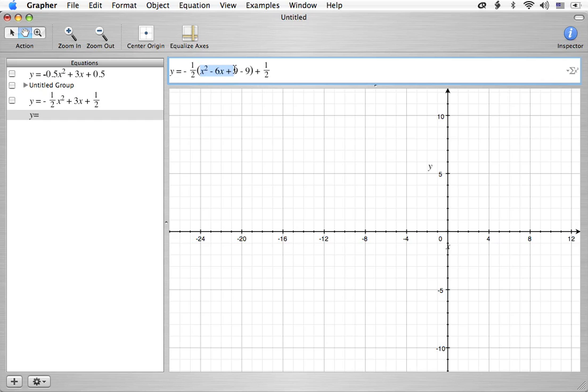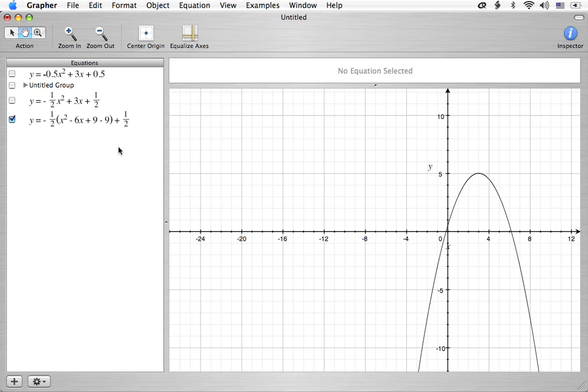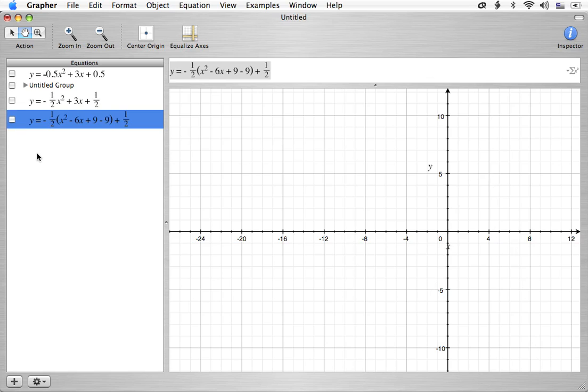The next thing is we want to take these three terms and separate them from this term right here. So y equals our negative 1 half, and we're going to separate the first three terms out, so we're going to have x squared minus 6x plus 9. And the next thing we're going to have is a negative times a negative, so it's going to be positive, and then we have 1 half times 9, which will get us 9 halves. So we're going to have plus 9 halves, and then plus 1 half.